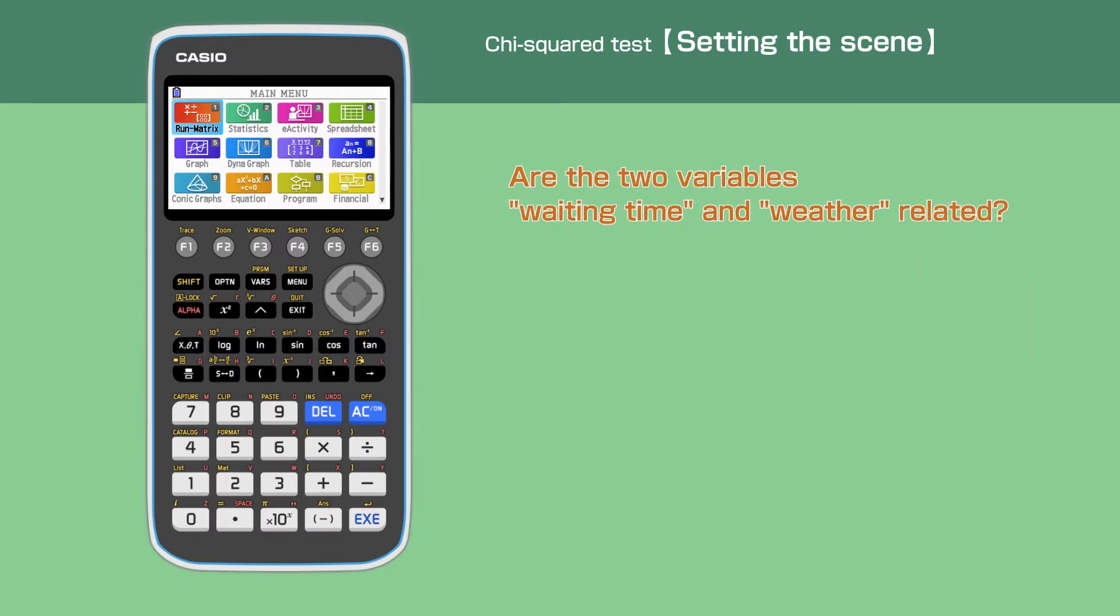In this video, we are going to test if the two variables, waiting time and weather, are related. We will use the Chi-Squared test to determine the independence of the two variables.